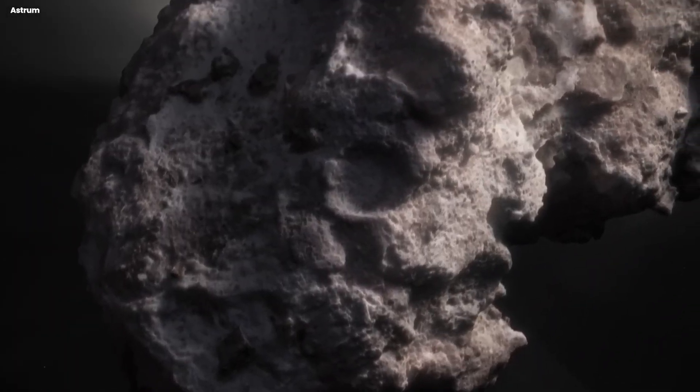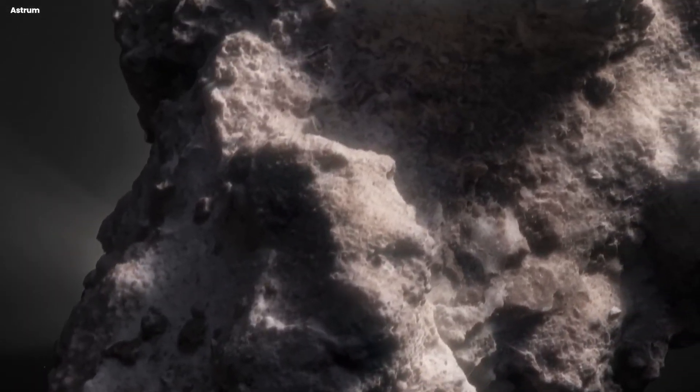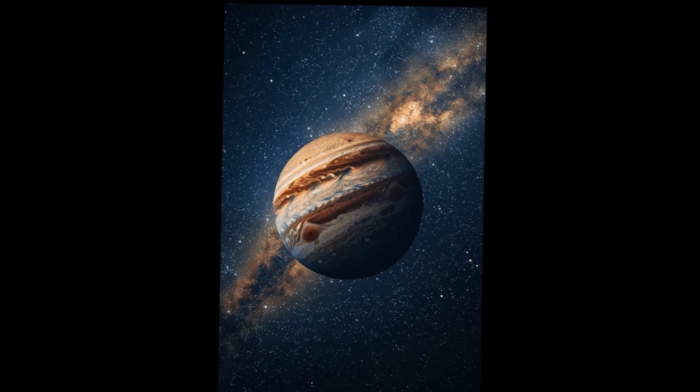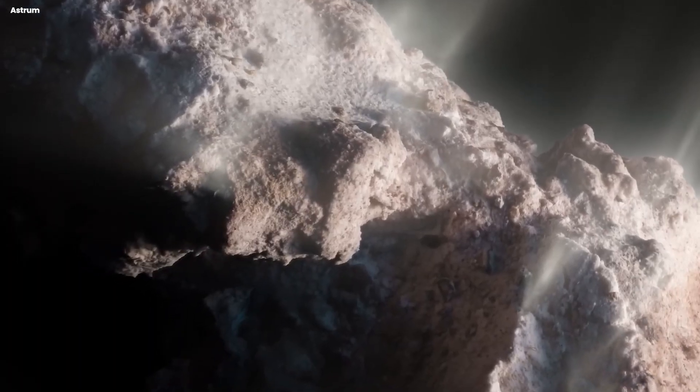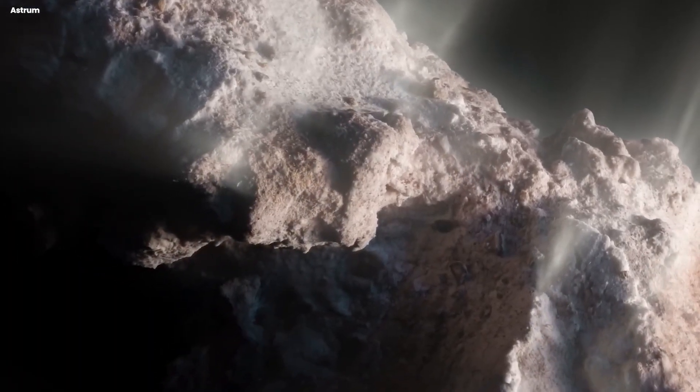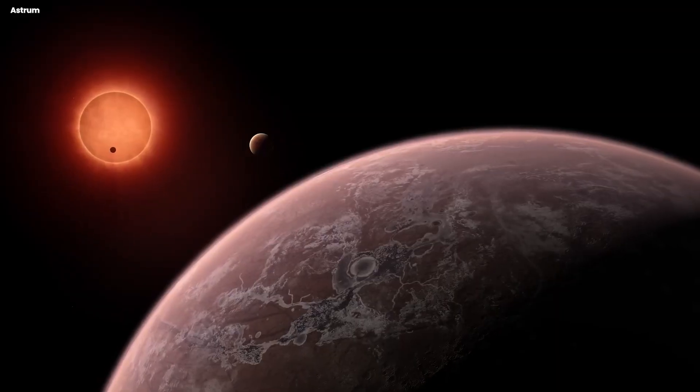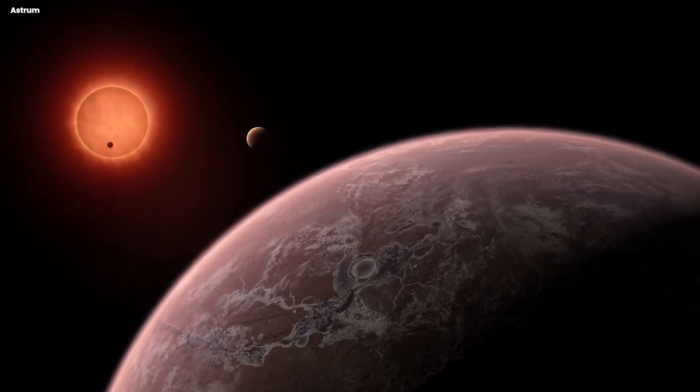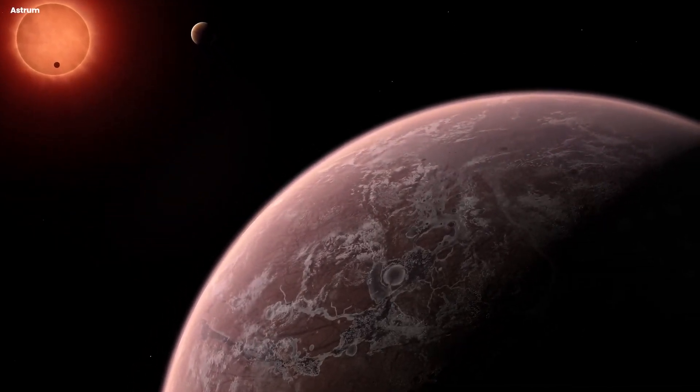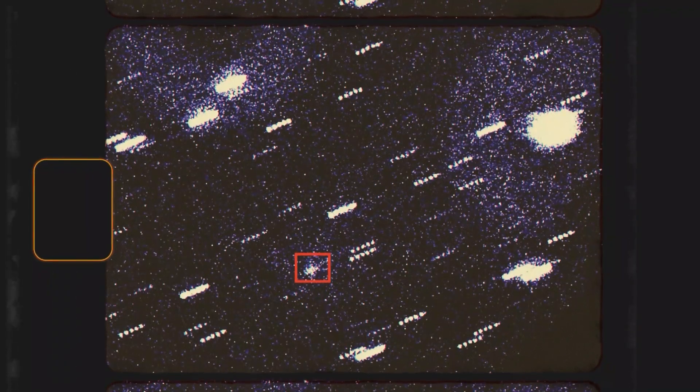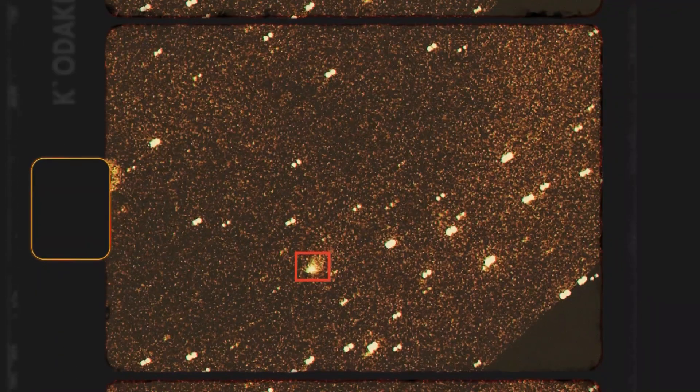On March 16th, 2026, 3I Atlas will fly within 53.6 million kilometers of Jupiter. If the object is going to do anything unusual, that would be another opportunity. Jupiter is the most massive planet in the solar system, it has the strongest magnetic field, and if 3I Atlas has any kind of propulsion system or any reason to interact with planetary environments, Jupiter would be the place to do it. Loeb will be watching that flyby very carefully. And if 3I Atlas shows any sign of maneuvering or unusual activity near Jupiter, all bets are off and the alien tech theory comes roaring back.